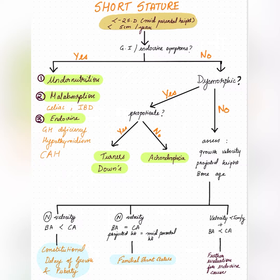The first thing you have to rule out is secondary versus primary short stature. Secondary short stature is due to an underlying GI or endocrine cause. If no such cause is present, it is primary short stature. Let's deal with primary first.